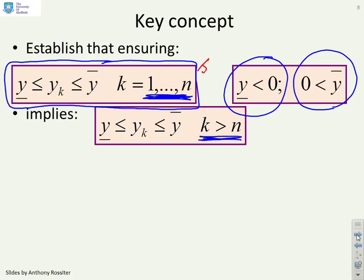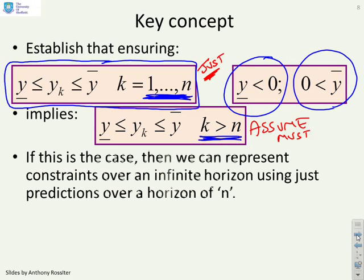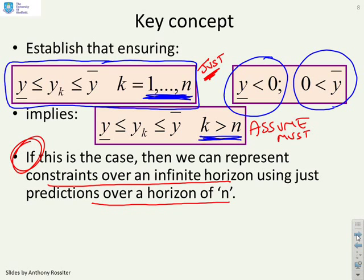In simple terms, I want to just check the constraints for the first 10 samples and then assume that the constraints must be satisfied for all the samples beyond n. Now if I can do that, there's a key word, if I can do that, then what we've essentially said is I can represent constraints over an infinite horizon just using predictions over horizon of n.